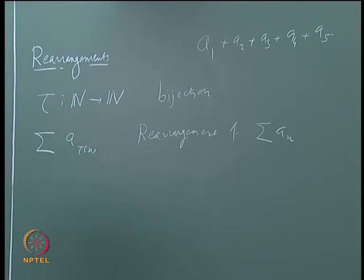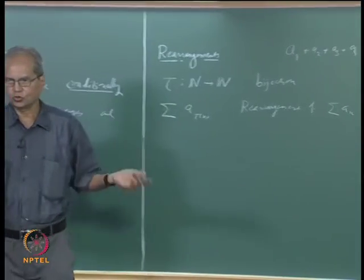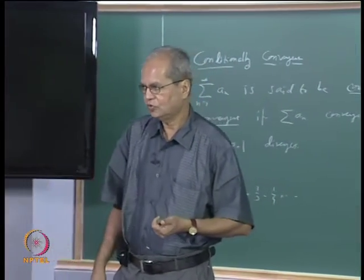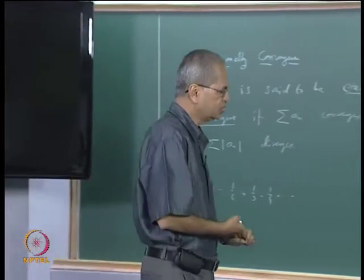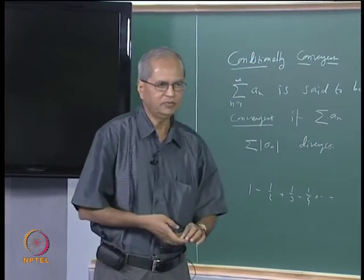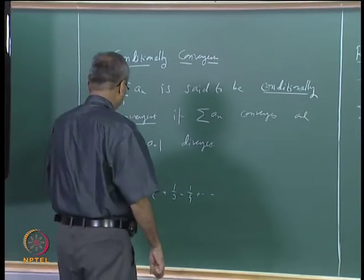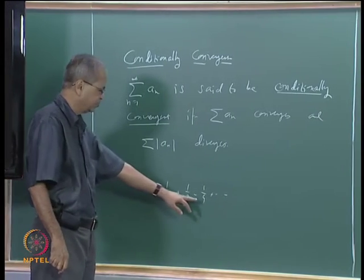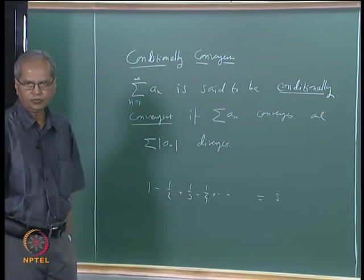Rearrangement simply means you write the terms of the series in some different order. The obvious question is: if the original series converges, does this rearrangement also converge? And does it converge to the same sum? It turns out that is true if the series is absolutely convergent, but things are very bad if the series is conditionally convergent. Let us take the same example. We have seen that the series 1 minus 1/2 plus 1/3 minus... converges. Suppose its sum is s.